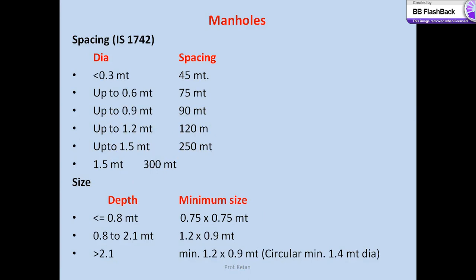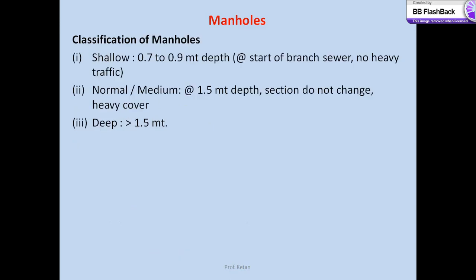The minimum size has also been specified by Indian Standard. If depth is less than 0.8 meter, the minimum size required is 0.75 meter by 0.75 meter — sufficient for any personnel to go inside for cleaning and maintenance. If depth is between 0.8 to 2.1 meters, the minimum size suggested is 1.2 meter by 0.9 meter. For greater than 2.1 meters depth, the minimum is 1.2 by 0.9 meter, and if circular, the minimum diameter would be 1.4 meters.